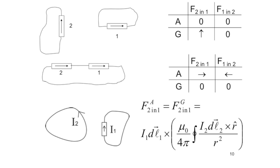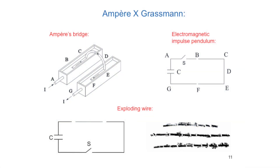How did we forget Ampere and keep only Grassmann? Because they share an amazing property: when you integrate the force of a closed circuit of arbitrary shape acting on a current element of another circuit, they agree with one another. So for two or more closed circuits you cannot distinguish them. Since Ampere's law is not compatible with Einstein's theory of relativity — which is based on Lorentz — the textbooks simply deleted Ampere's force. But nowadays people are doing experiments with open circuits, or looking for effects on a portion of a circuit due to the remainder, beginning with Ampere himself: the electromagnetic impulse pendulum, exploding wire phenomena showing longitudinal repulsive forces, and so on.